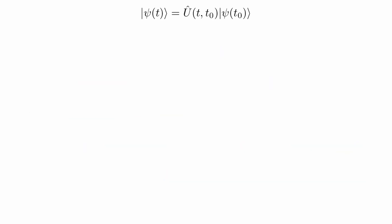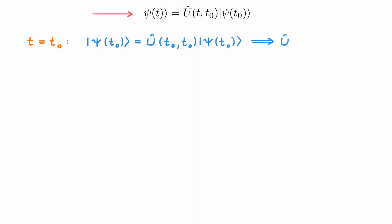Our definition of the time evolution operator is rather general, so the first thing we want to do is learn more about the specific form that U takes. Let's start with the simplest case when both time arguments of the operator are the same. We can write ψ(t₀) equal to U(t₀,t₀) acting on ψ(t₀). Since ψ is an arbitrary ket, this implies that U(t₀,t₀) is simply the identity operator. If time doesn't change then the state doesn't change either, so the time evolution operator should simply be the identity.